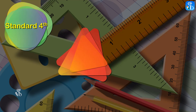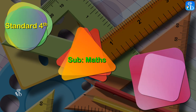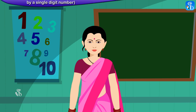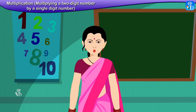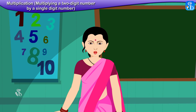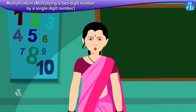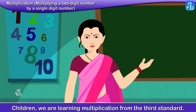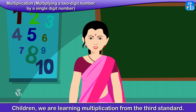Standard 4 Subject Maths, Chapter 5: Multiplication, Part 1. We are learning multiplication of a two-digit number by a single-digit number. Children, we are learning multiplication from the third standard.